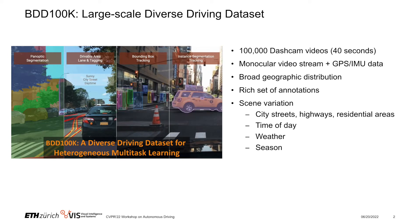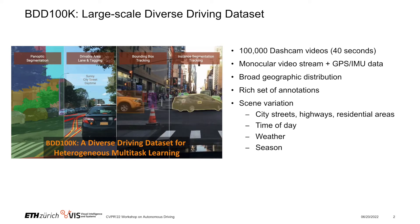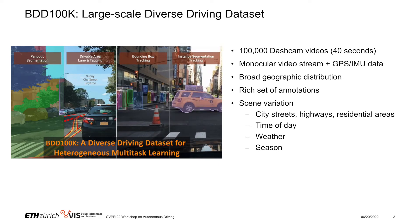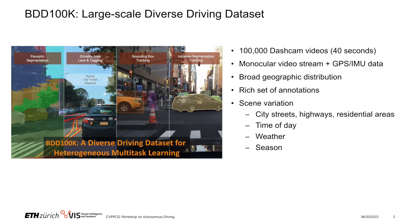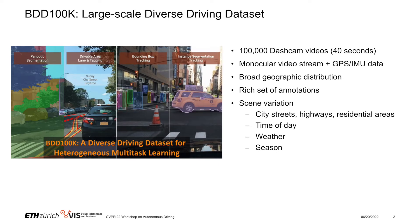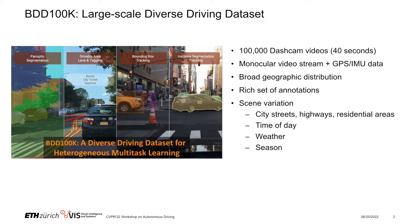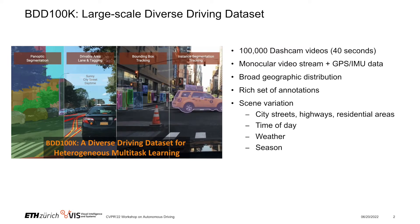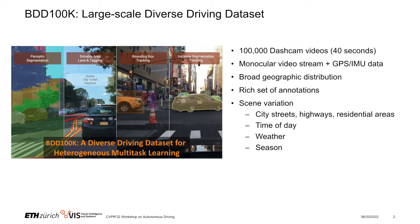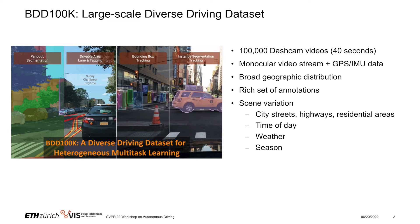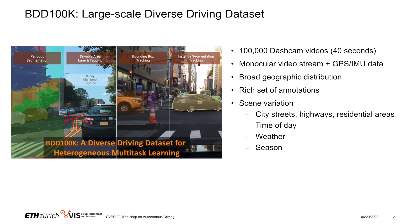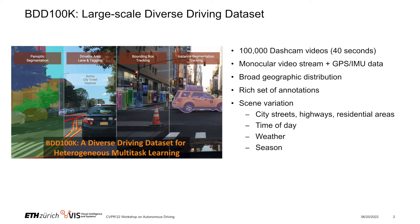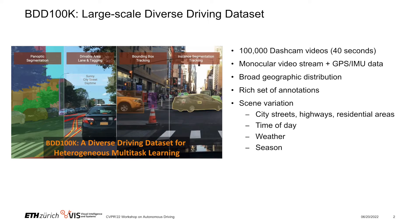It consists of 100,000 dashcam videos which are 40 seconds long each. We provide a monocular video stream in addition to GPS and IMU data. We have a very broad geographic distribution in this dataset, as well as a rich set of annotations, as you can see here on the left.